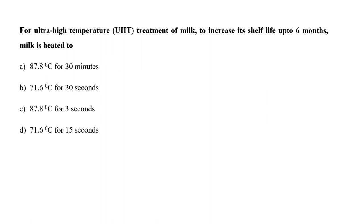For ultra-high temperature (UHT) treatment of milk to increase its shelf life up to 6 months, milk is heated to A. 87.8°C for 30 minutes, B. 71.6°C for 30 seconds, C. 87.8°C for 3 seconds, or D. 71.6°C for 15 seconds? UHT treatment is also called HTST treatment, i.e. high temperature short time. The temperature specified is 71.6°C (approximately 72°C) for 15 second intervals. So the answer is option D.